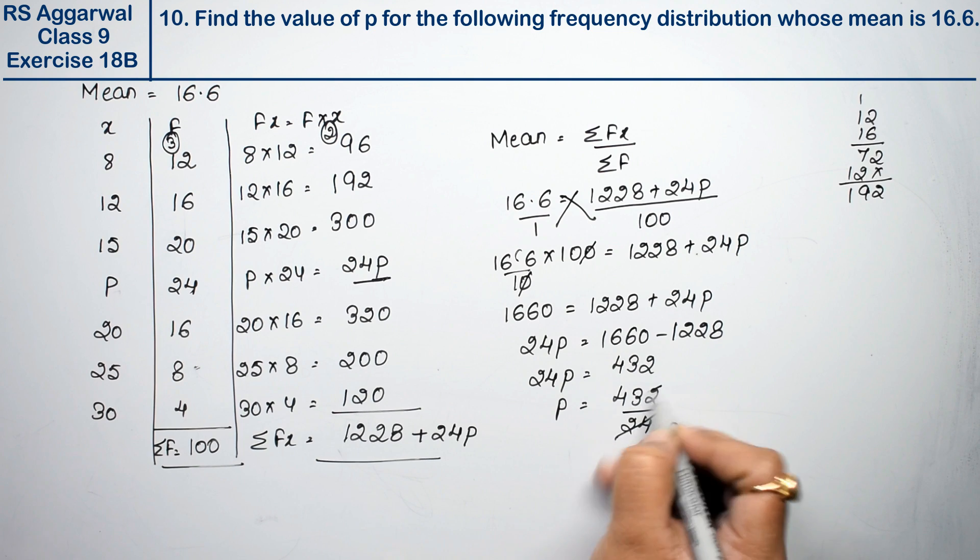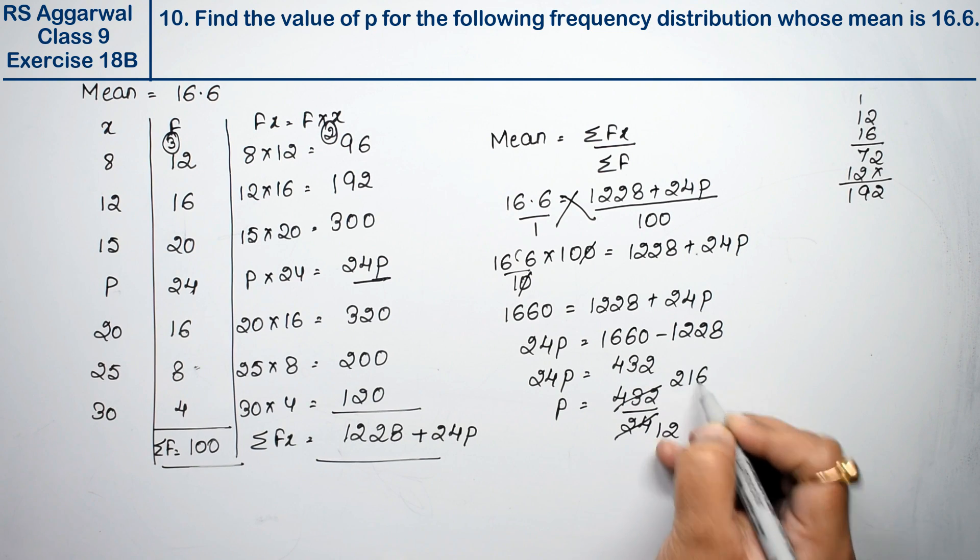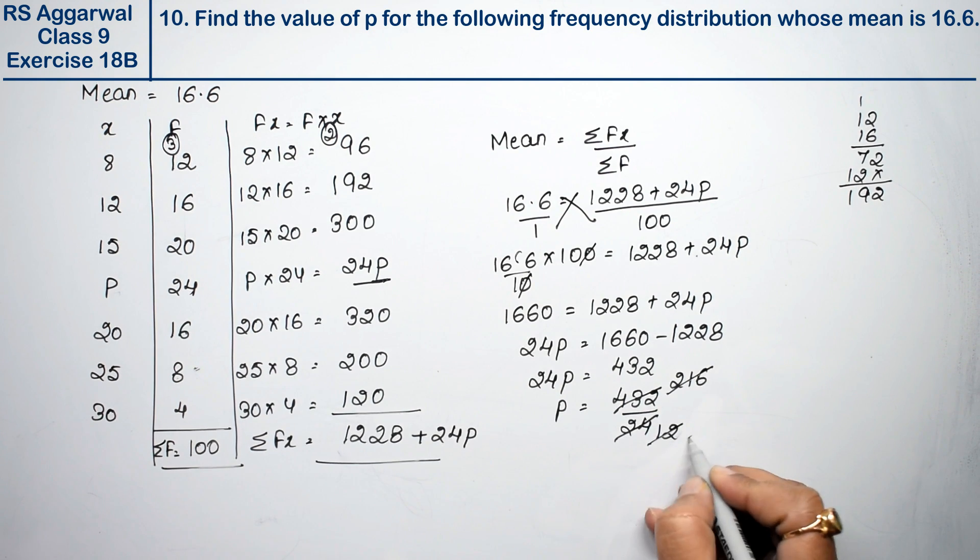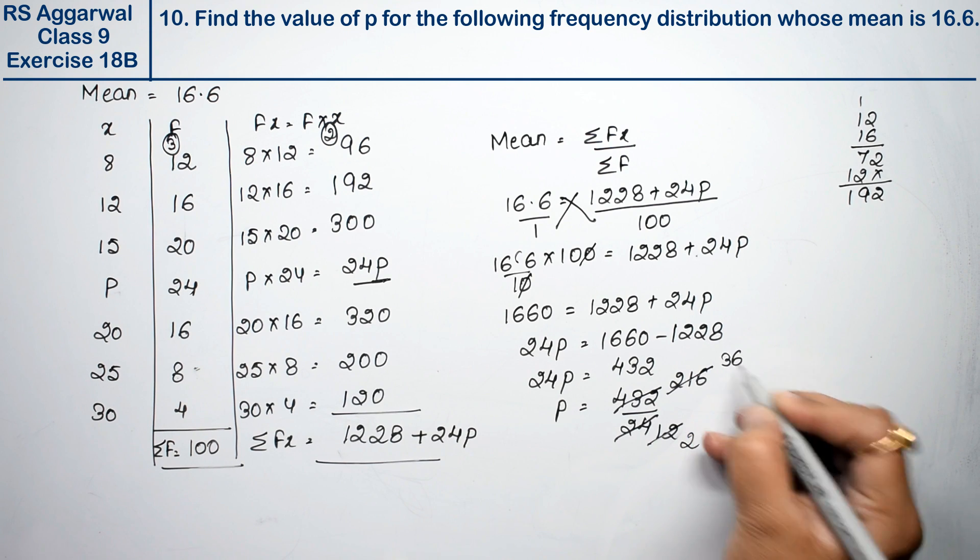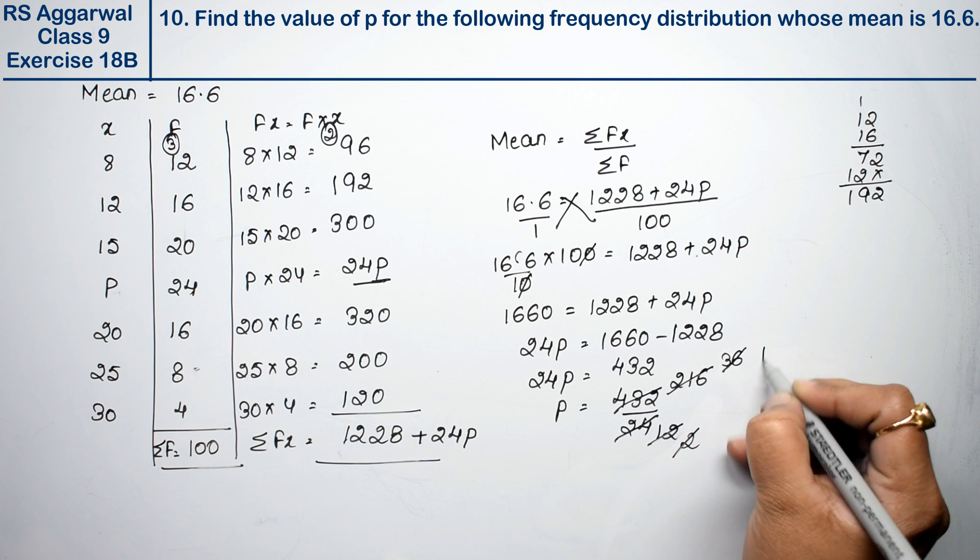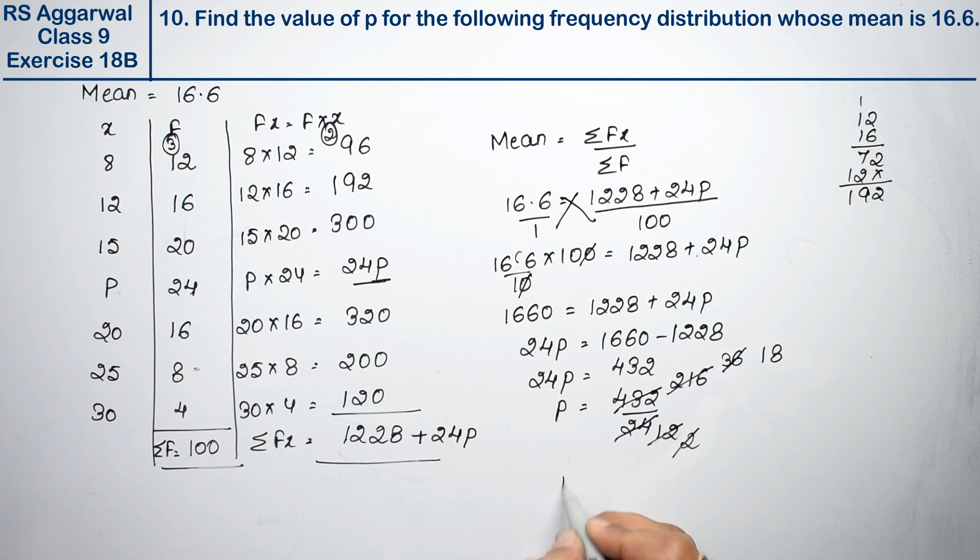Dividing 432 by 24: 2 times 12 is 24, working through the division steps gives us 18. So p equals 18, which is the answer.